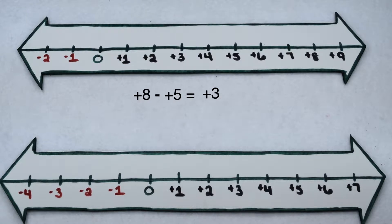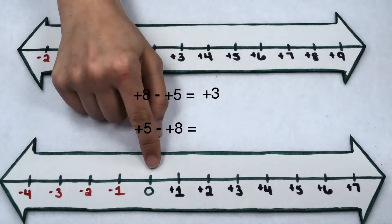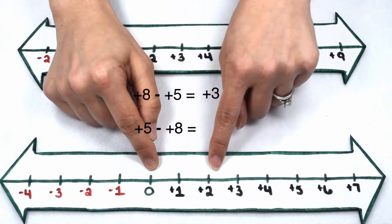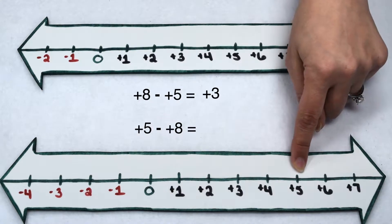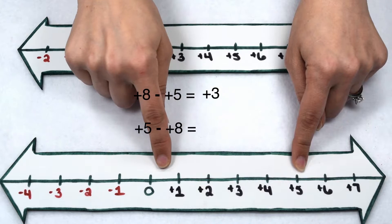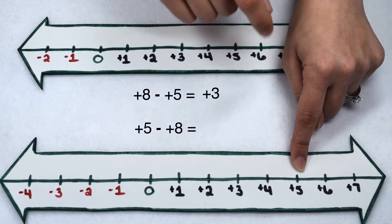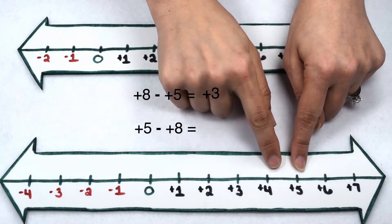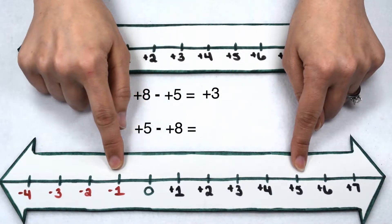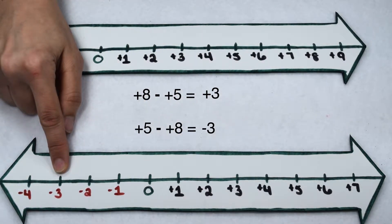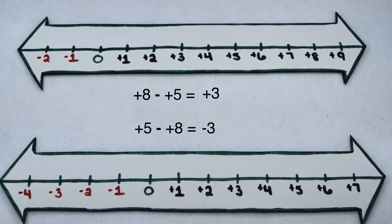But what if I want to do that problem in the other order — positive 5 minus positive 8? To do that, I'm going to start at 0. Positive 5 is going to send me 5 places to the right. If I thought of it as taking away, I'm only at 5 and don't have enough places to take away 8. However, if I think of subtracting as doing the opposite, I could do the opposite of positive 8: instead of going 8 places to the right, I can go back 8 places to the left. When I do, that sends me to the negative side of my number line. So positive 5 minus positive 8 leaves me at negative 3.